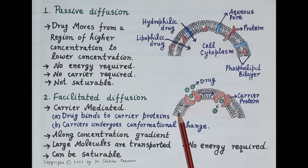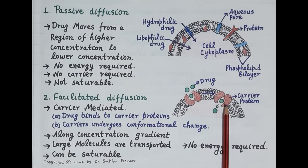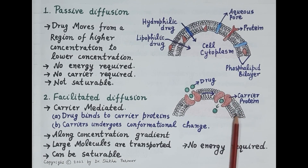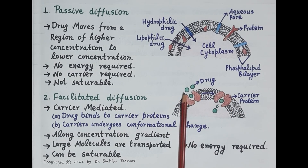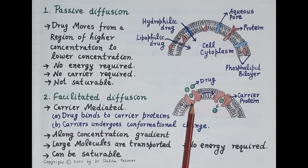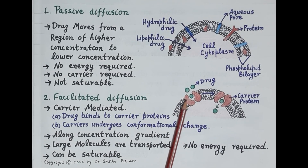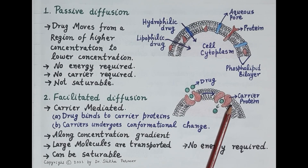Looking at this diagram showing the cell membrane — the phospholipid bilayer — carrier proteins are embedded in the phospholipid bilayer, shown here in red. The drug, shown in green, binds to the carrier proteins. The carrier proteins then undergo a conformational change, and as they do so, the drug is transported inside the cell.